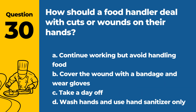Question 30. How should a food handler deal with cuts or wounds on their hands? A. Continue working but avoid handling food. B. Cover the wound with a bandage and wear gloves. C. Take a day off. D. Wash hands and use hand sanitizer only. Answer: B. Cover the wound with a bandage and wear gloves. If a food handler has cuts or wounds on their hands, they should cover the wound with a bandage and wear gloves while handling food to prevent contamination.